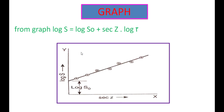This value is determined by the Angstrom's pyrheliometer instrument. This is how the pyrheliometer is constructed, how it works, and how the solar constant is calculated experimentally.